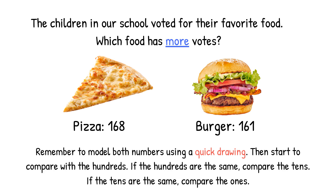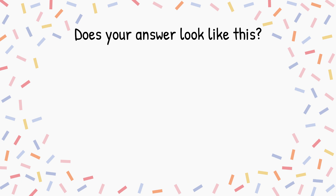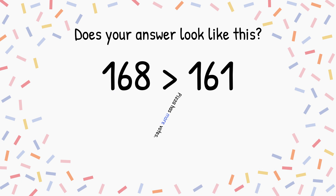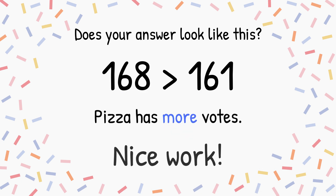Let's try one more. The children in our school voted for their favorite food. Which food has more votes? Remember to model both numbers using a quick drawing, then start to compare with the hundreds. If the hundreds are the same, compare the tens. If the tens are the same, compare the ones. Press pause to give yourself more work time, then press play when you have your answer. Does your answer look like this? 168 is greater than 161. Pizza has more votes. Nice work!